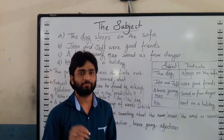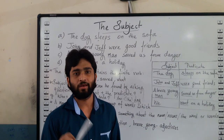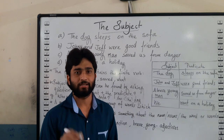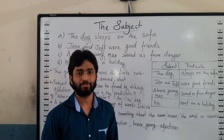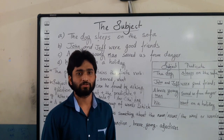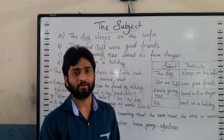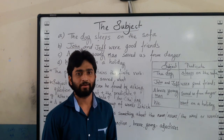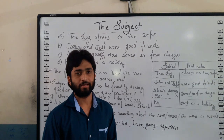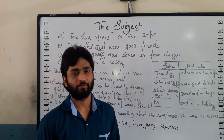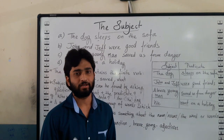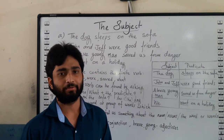Before that, we have to keep in mind certain things. There is a finite verb that agrees with the subject in number. If the subject is in a singular form, the verb also should agree in a singular form. And if the subject is in a plural form, the verb also will be in a plural form. So that is known as subject-verb agreement.